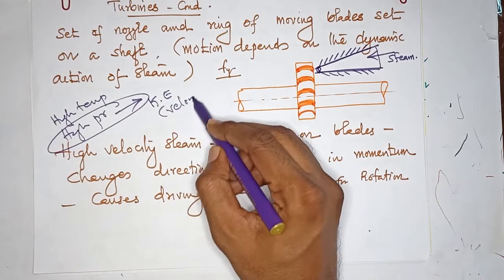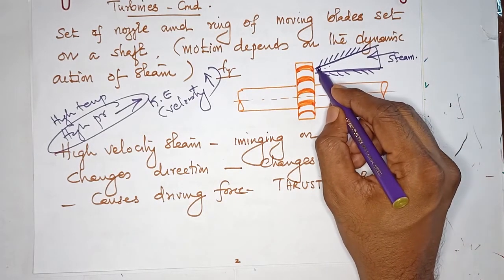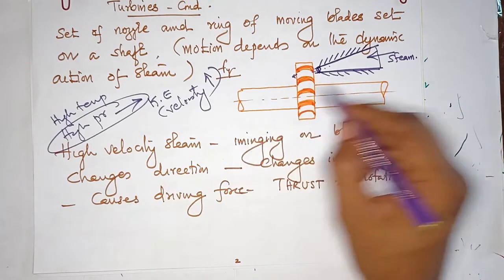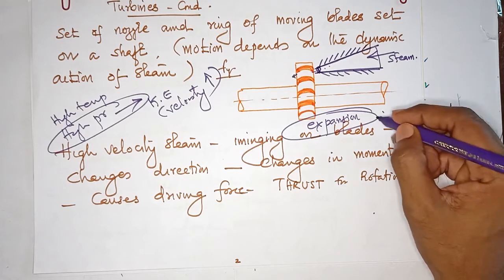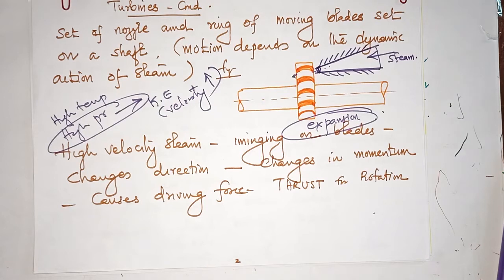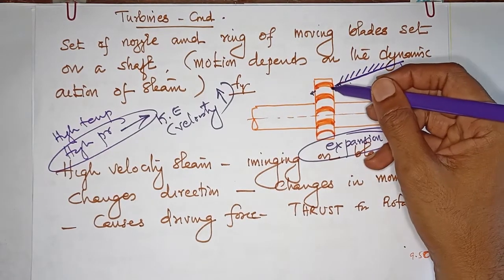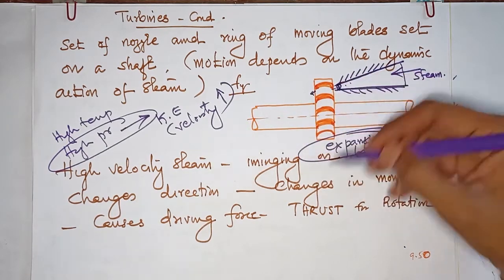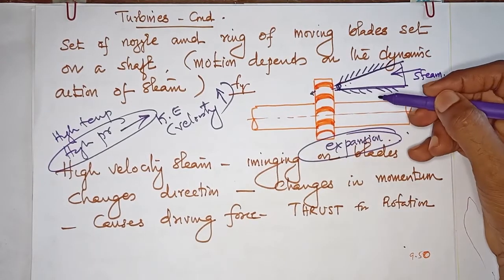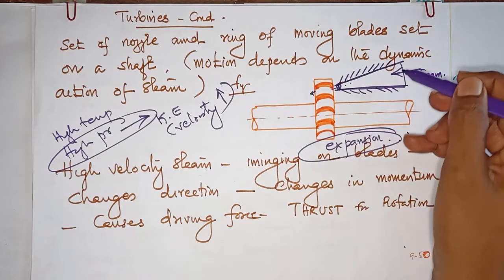Because of the nozzle geometry, the area decreases and automatically the pressure energy is converted into kinetic energy — the velocity of the steam increases. This high-velocity steam then impinges, meaning it falls on the moving blades. The blades are placed over the runner, and when the runner rotates, the shaft also rotates.